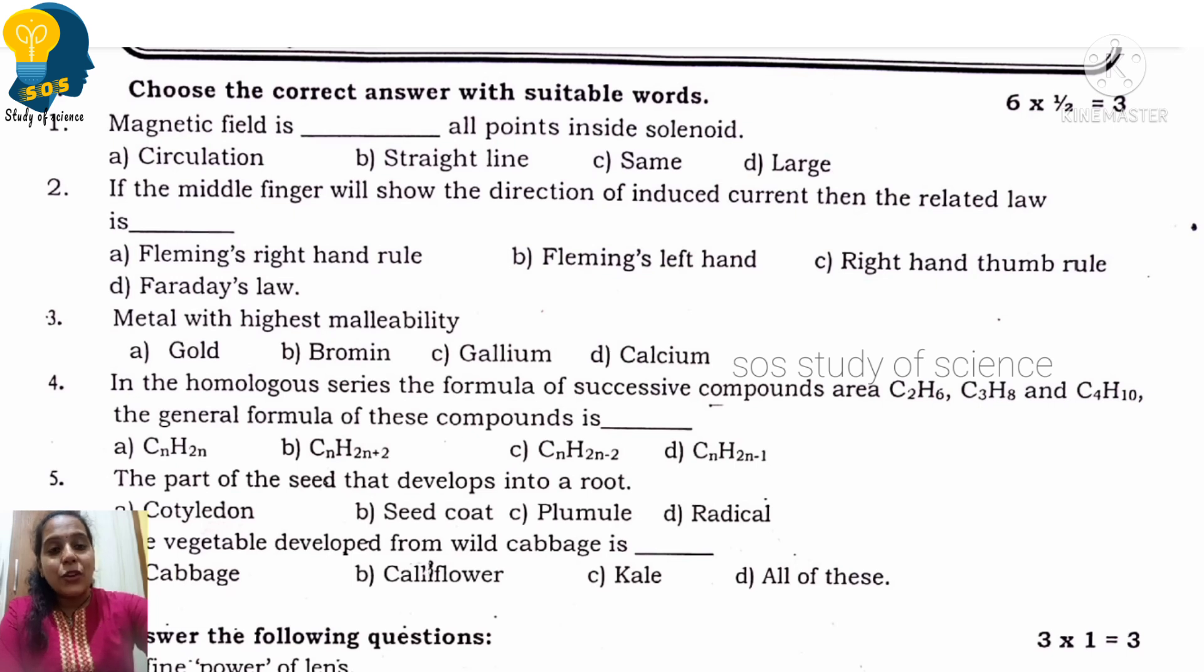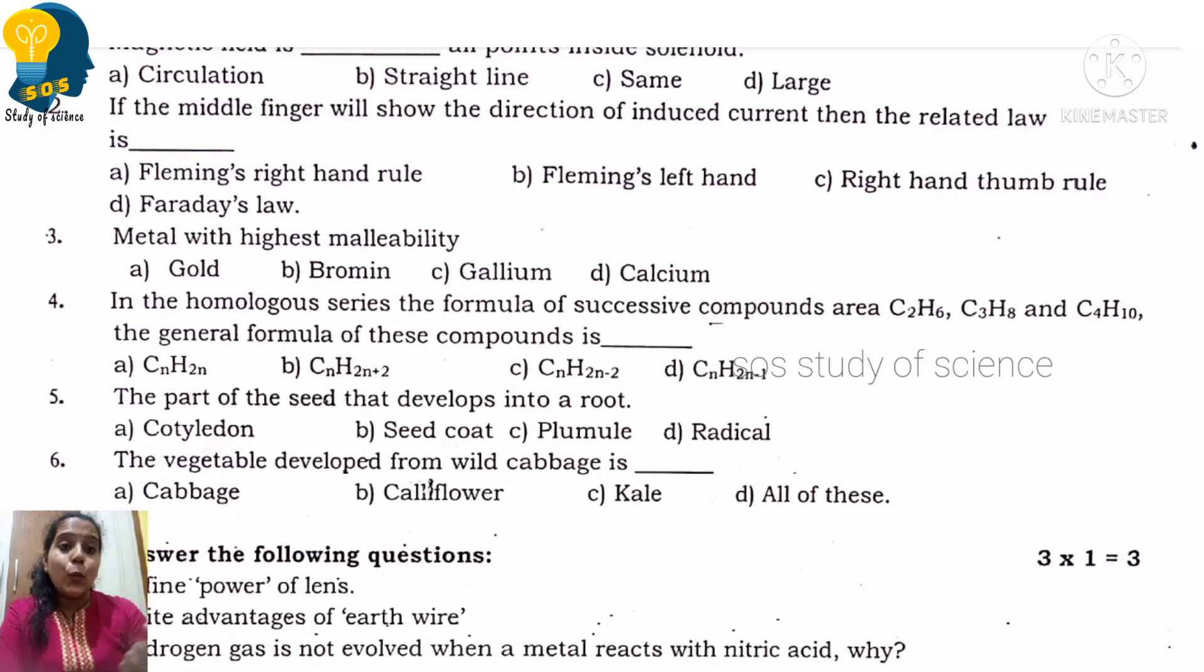Moving to next question. The part of the seed that develops into a root. We have talked about how organisms reproduce. So the part of the seed that develops into root is radical. R for root and radical. Very easy, R for R. So option D is right.